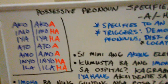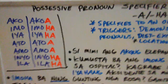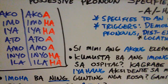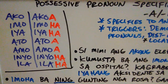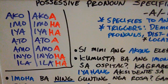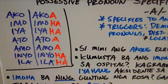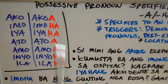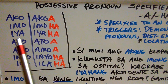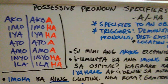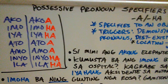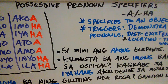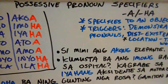We get the possessive pronoun specifiers that are specific to an object or a noun. You can ask yourself: why is it that we have possessive pronouns that are imong and imo — for example, imo or imoha, or ato or atoa? Why do we have two types? This video will answer that question. You already know what specifiers do, and you can kind of see where this is all going to come into play.